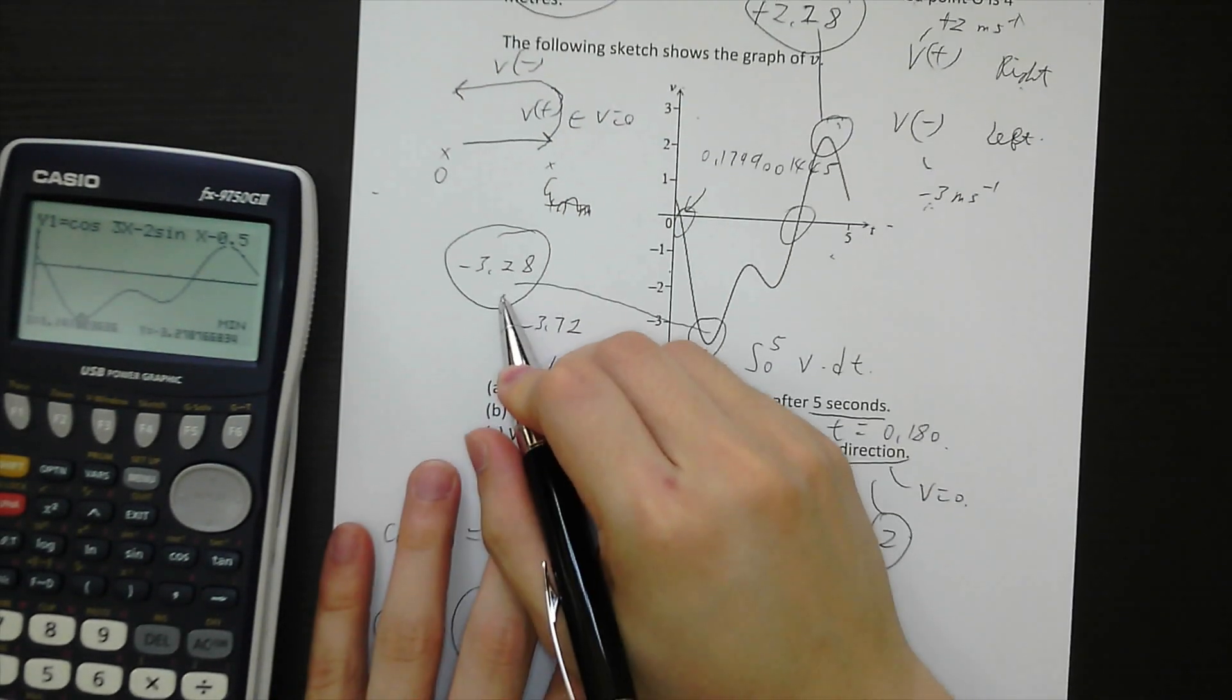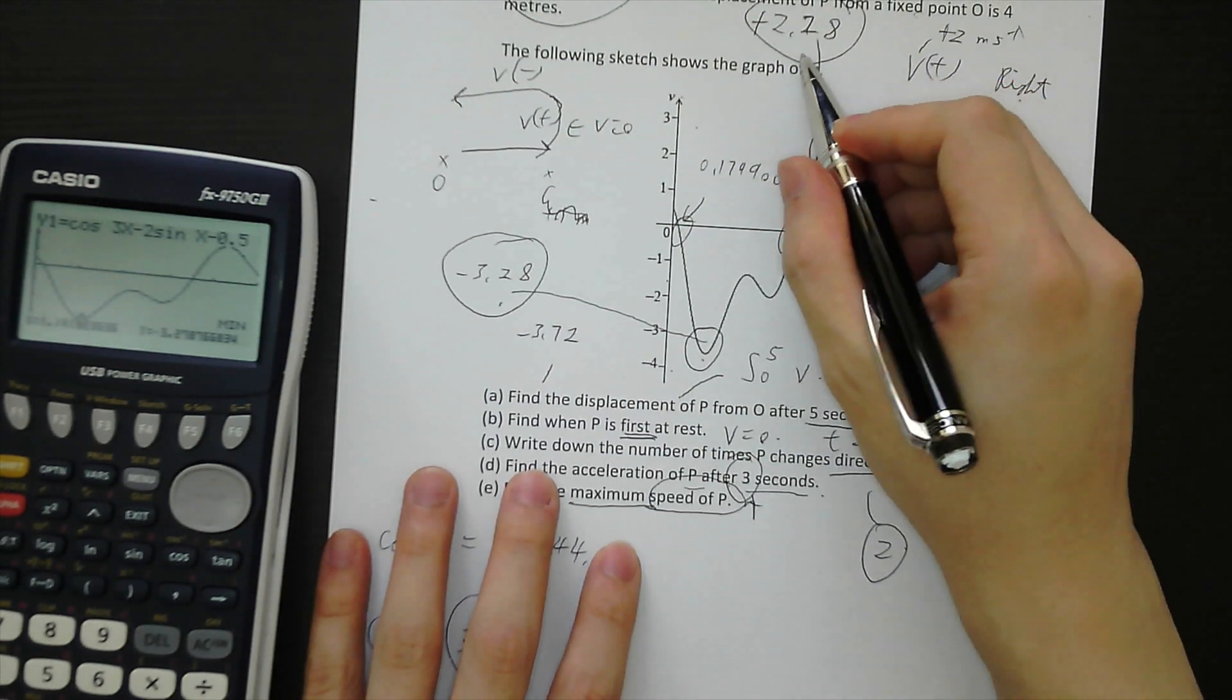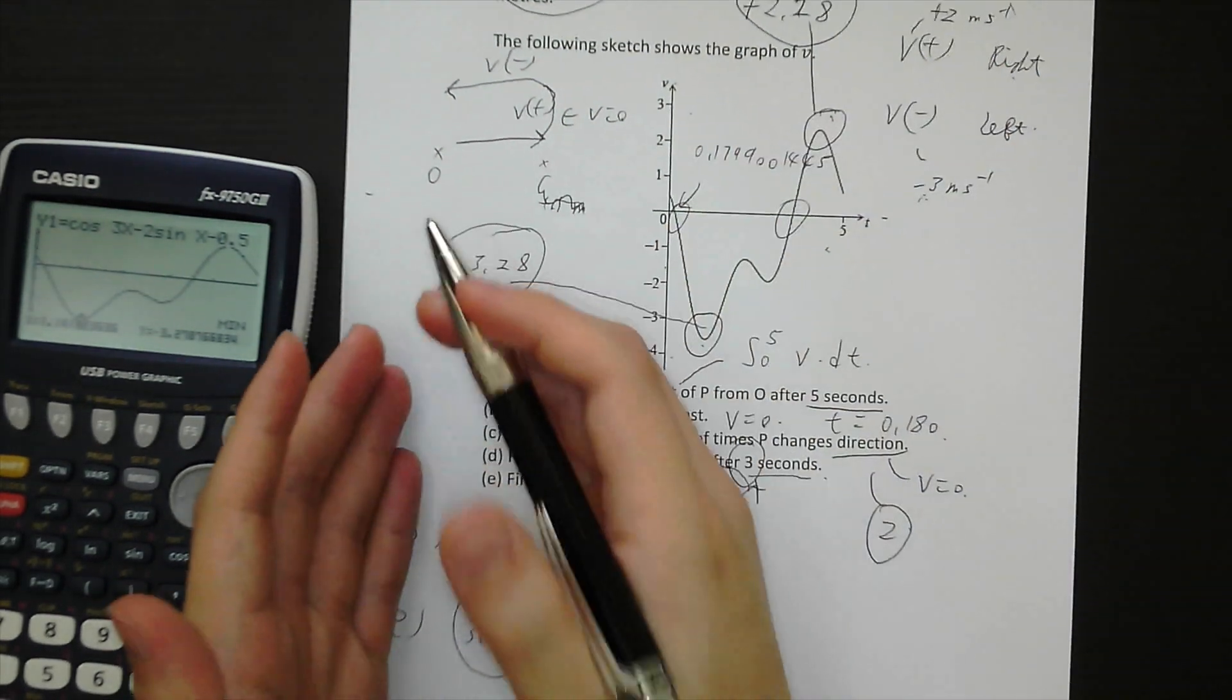So the maximum speed will be 3.28 at this point, because 3.28 is larger than 2.28. Going to the left hand side at this speed. That's the maximum speed of P. Thank you.